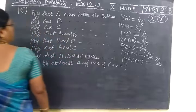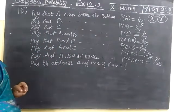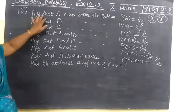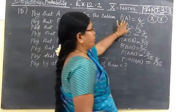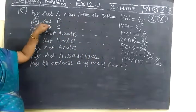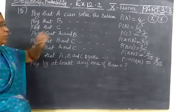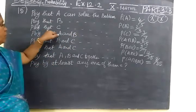It is given probability that A can solve the problem. The person A is solving the problem, P of A equal to 4 by 5. And the person B solves the problem, P of B equal to 2 by 3. Similarly, it is given for the person C.